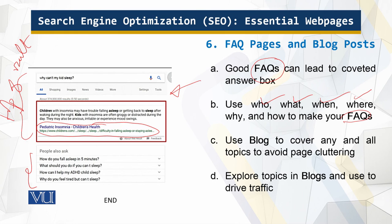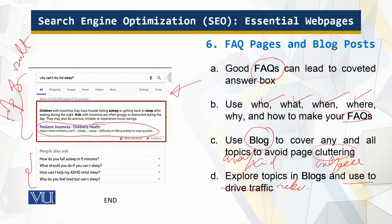For topics that have not been answered in the FAQ, or which may be creating clutter or interference, use the blog. In the blog you can explore topics which were unexplored in the FAQ. You can also use the blog to drive relevant traffic. These are some of the main pages you should be looking at to optimize with reference to search engine optimization.